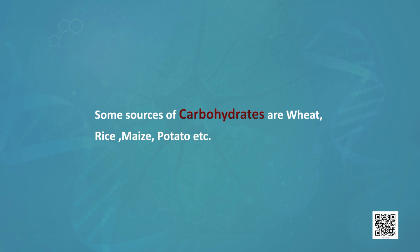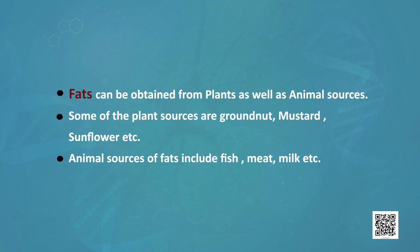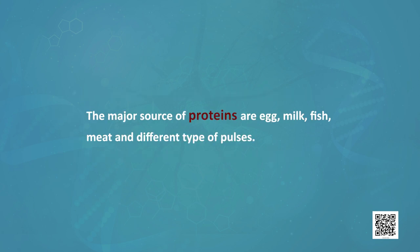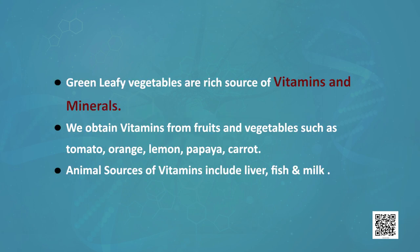Some sources of carbohydrates are wheat, rice, maize, potato, etc. Fats can be obtained from plants as well as animal sources. Some of the plant sources are groundnut, mustard, sunflower, etc. Animal sources of fats include fish, meat and milk. The major sources of proteins are egg, milk, fish, meat and different types of pulses. Green leafy vegetables are rich sources of vitamins and minerals. We obtain vitamins from fruits and vegetables such as tomato, orange, lemon, papaya, carrot. Animal sources of vitamins include liver, fish and milk.